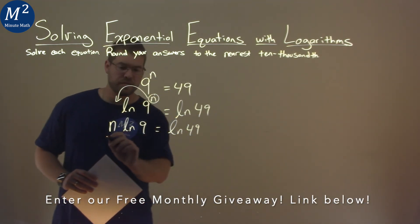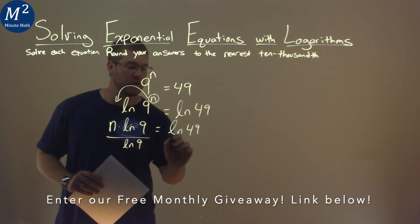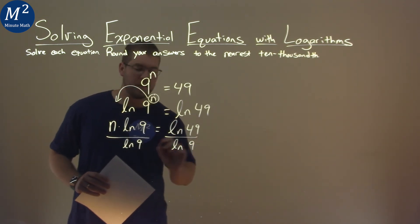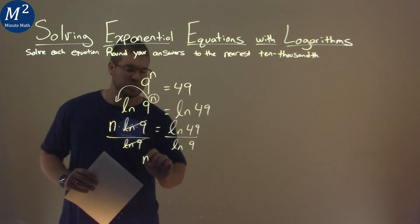Opposite of multiplication is division. Divide both sides by the natural log of 9. And this helps us get n by itself, which is our goal.